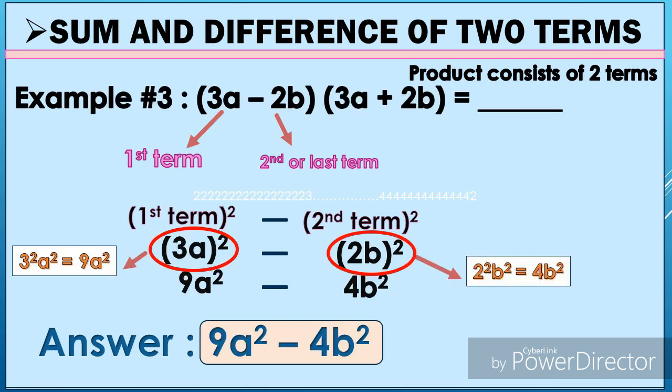Now for the third example: the quantity of (3a − 2b) times the quantity of (3a + 2b). The first term is 3a and the second term is 2b. Following the pattern, we square the first term: (3a)² = 3²a² = 9a². For the second term, (2b)² = 2²b² = 4b². So the answer is 9a² − 4b².